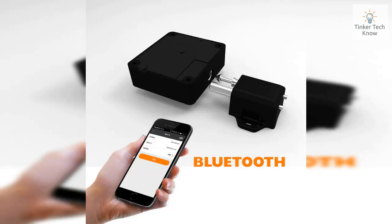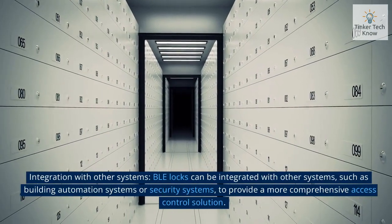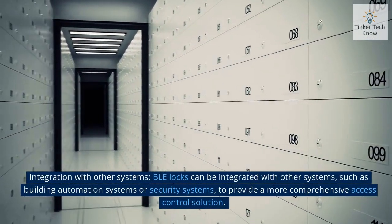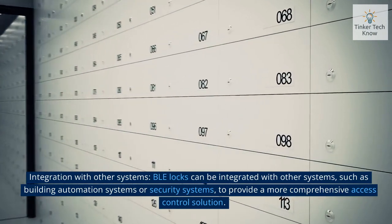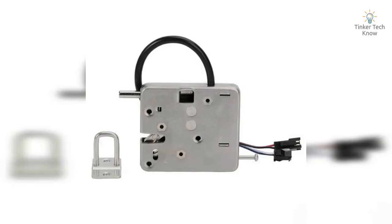We will discuss BLE locks integration. Bluetooth Low Energy, or BLE, locks use Bluetooth technology to establish a connection between the lock and a mobile device. Once connected, the user can control the lock using a mobile app or other compatible software. BLE locks can also be integrated with other systems, such as building automation systems or security systems, to provide a more comprehensive access control solution. Here are some of the BLE locks available in the market.